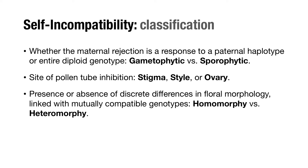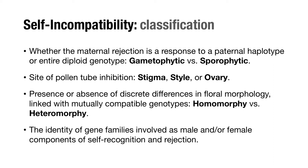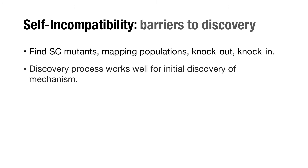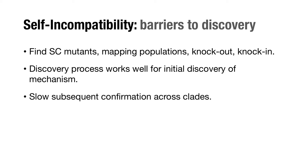In some species, a SI response is associated with discrete differences in floral morphology that define types that can or cannot interbreed. But the most reliable way to tell the SI systems apart is to identify the genes involved in the recognition and rejection response. Generally, the procedure relies on finding self-compatible mutants in otherwise SI species and mapping inheritance with filial crosses. Next, it relies on functional genetic studies for confirmation. This discovery process has worked very well, but it is limited to short-generation time plants, and confirming its existence across clades has been slow.